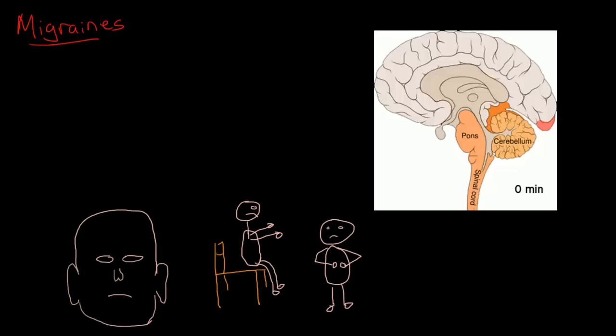Migraine headaches are defined by a cluster of symptoms, and these symptoms could include unilateral head pain, so just pain on one side of the head. It tends to be, so number one is unilateral pain.